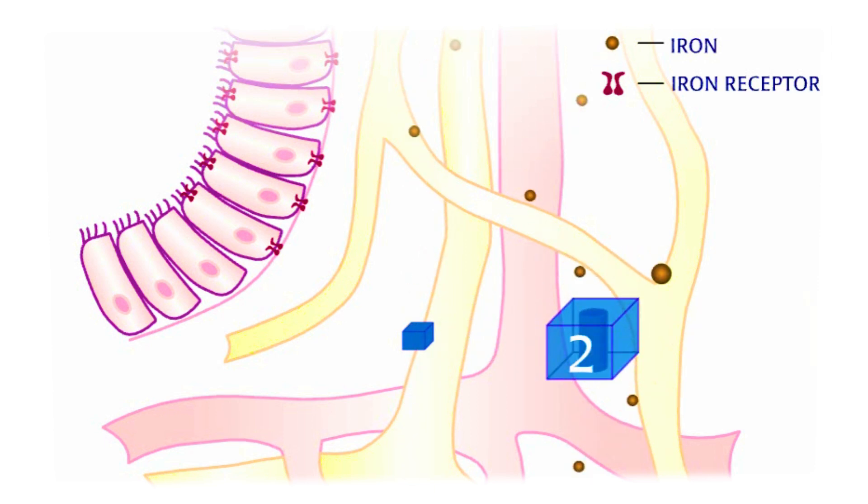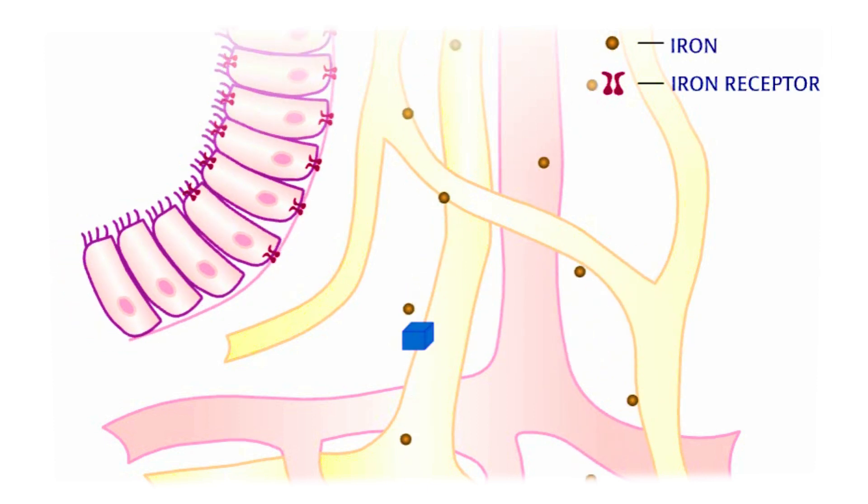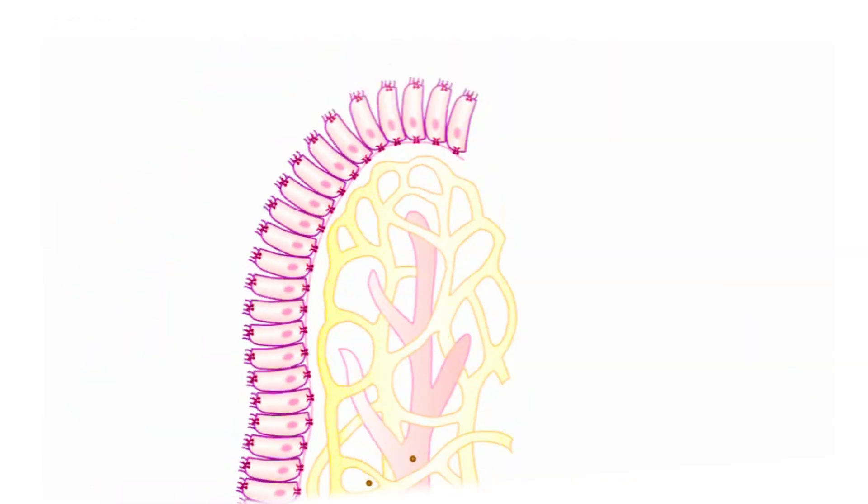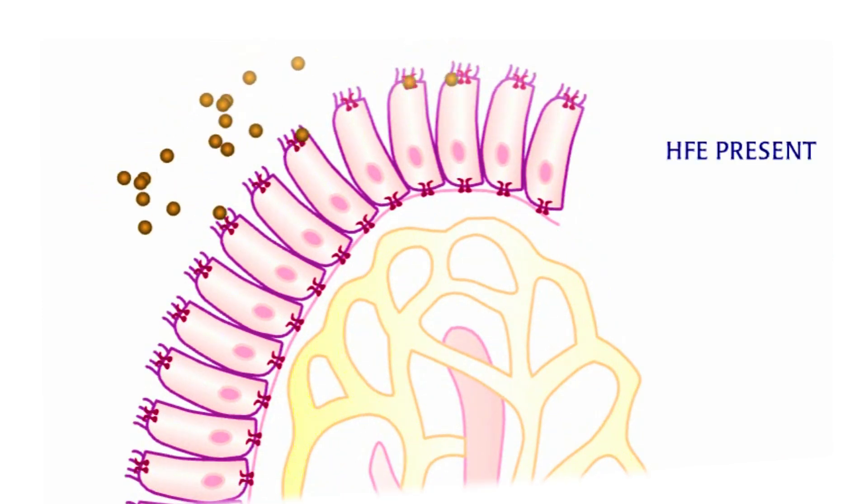If iron is needed, the villi cells of intestine are signaled and iron receptors are made and placed at both ends of the cells. Iron transport begins with the villi cells migrate from the valley to the tip of the villus. Receptors at the intestinal side of cell first grab the iron molecules and then draw them inside the cell. They pass through the cell's cytoplasm and exit the other side through additional iron channels that deliver the iron directly to the bloodstream.